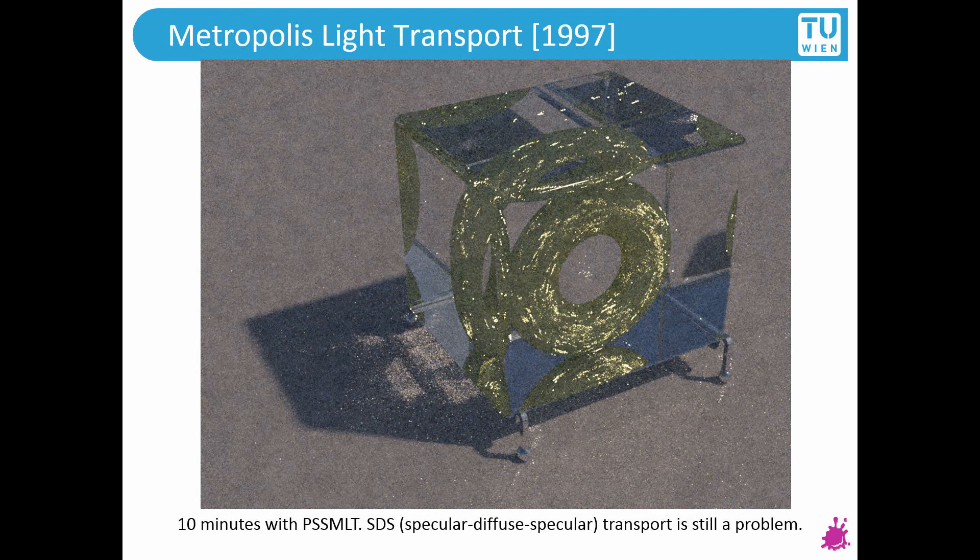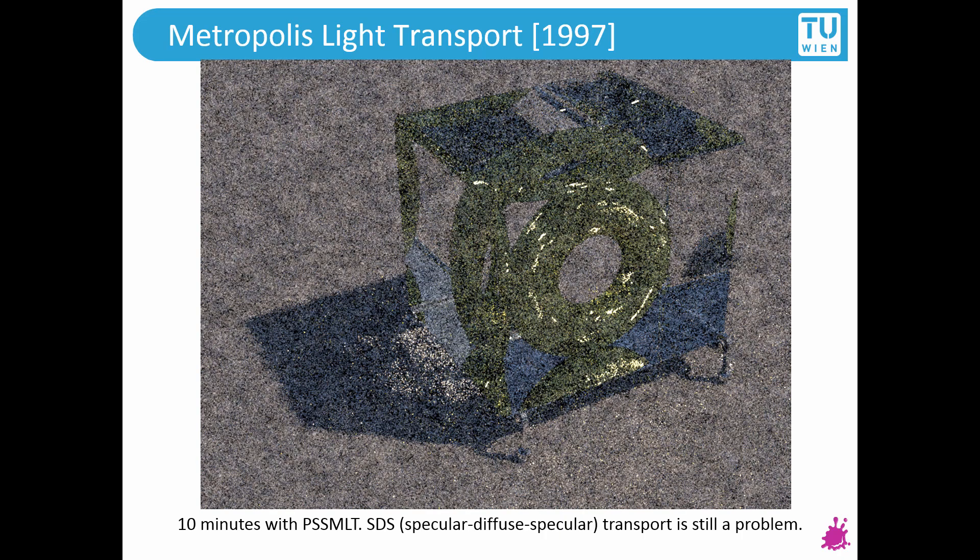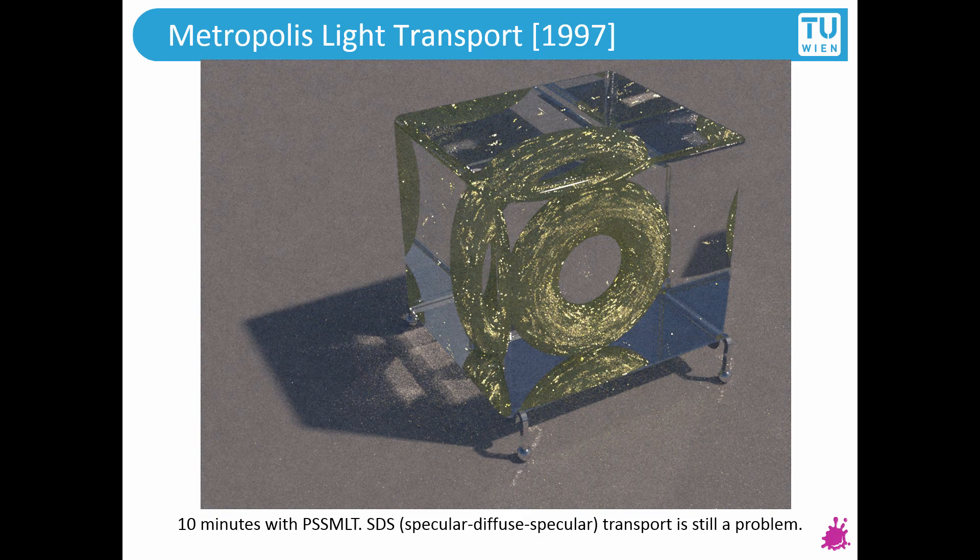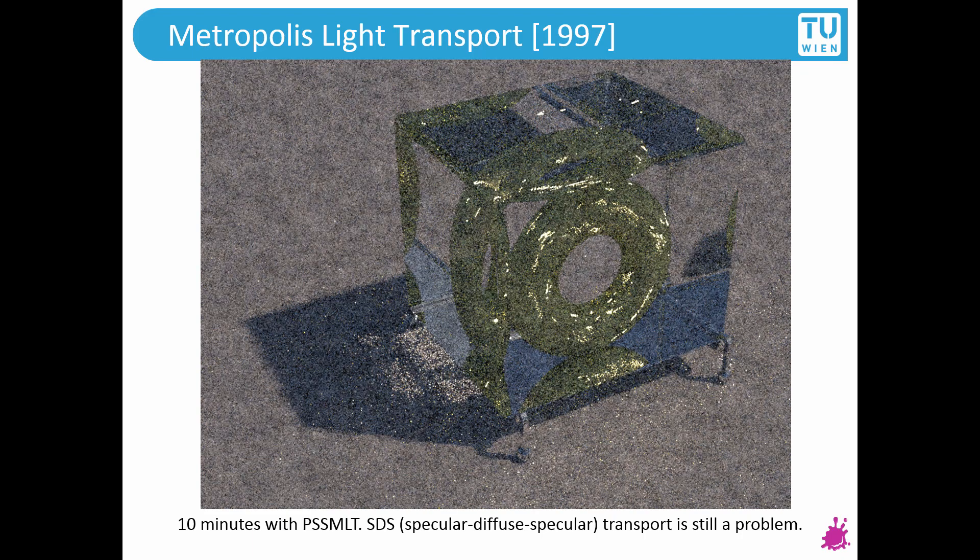So this looks like SDS to me, because we hit the glass cube, that's a specular bounce, then we hit the doughnut inside, and then we hit the glass cube again. So this is SDS. This is why it is so difficult to sample with Metropolis Light Transport.